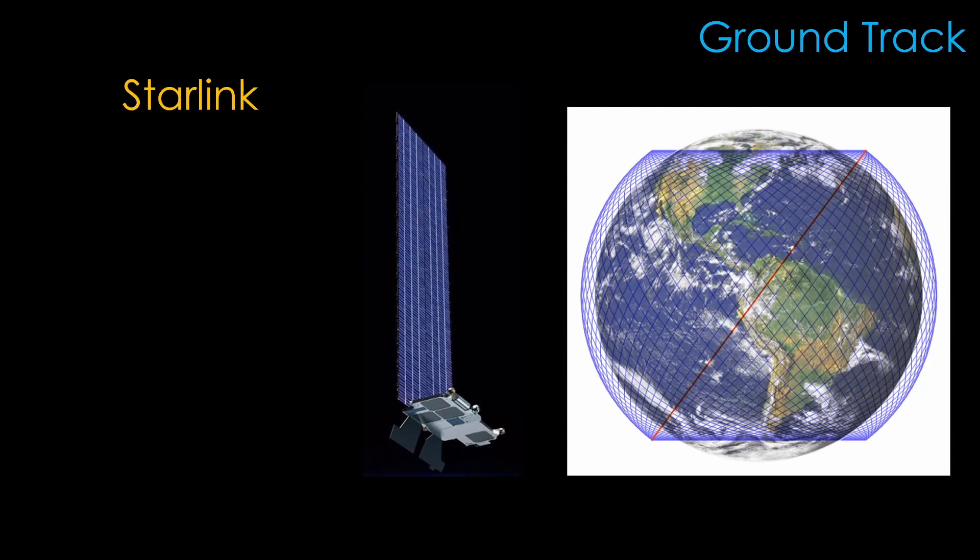SpaceX's Starlink uses a variety of inclinations, with satellites at 42 degrees, 48 degrees, 53 degrees, 70 degrees, and 97.6 degrees. They use this mix of inclinations to provide more satellite coverage where needed.